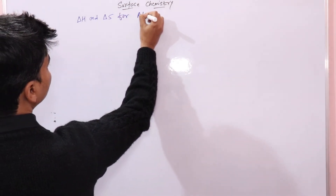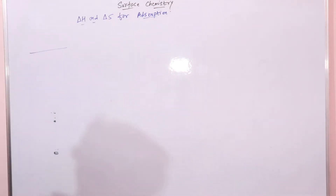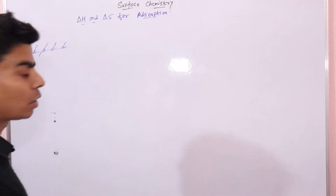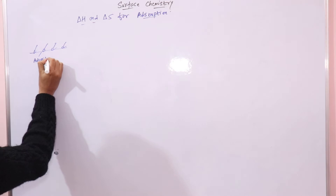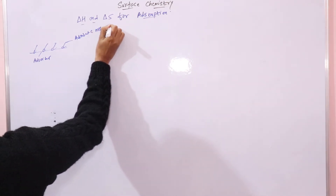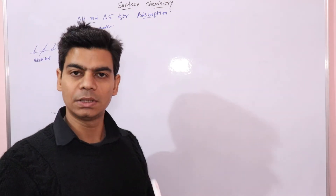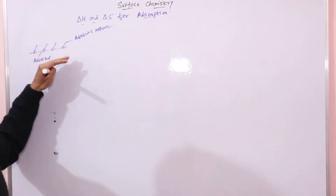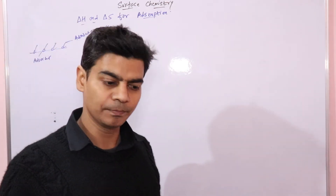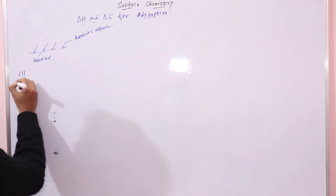In adsorption, adsorbate molecules get adsorbed on the adsorbent. The adsorbate molecules are gas molecules, and since this process involves attractive interactions, the molecules of gas get attracted to the surface. Whenever we have attractive interactions, heat is evolved.